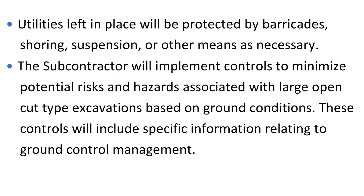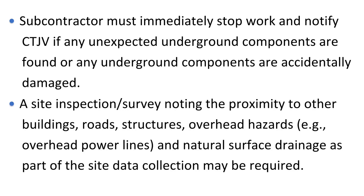The subcontractor will implement controls to minimize potential risks and hazards associated with large open-cut-type excavations based on ground conditions. These controls will include specific information relating to ground control management. The subcontractor must immediately stop work and notify CTJV if any unexpected underground components are found or any underground components are accidentally damaged. A site inspection survey noting the proximity to other buildings, roads, structures, overhead hazards, e.g., overhead power lines, and natural surface drainage as part of the site data collection may be required.